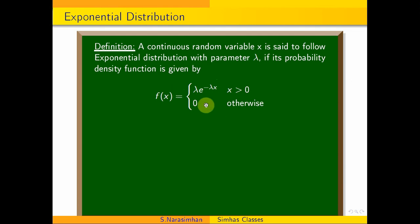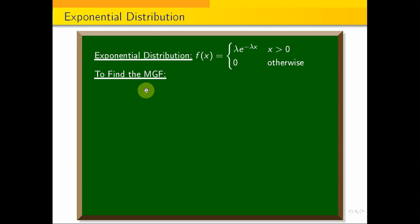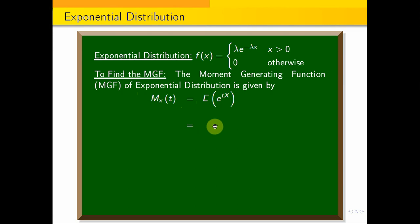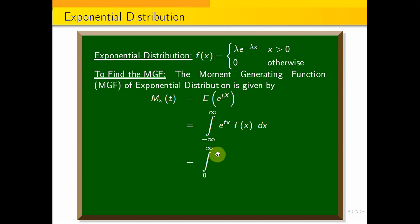This is the exponential distribution. Now, we look at the moment generating function (MGF). The MGF of a continuous random variable for exponential distribution is given by the formula: M_x(t) = E[e^(tx)] = integral from −∞ to +∞ of e^(tx) · f(x) dx. This becomes the integral from 0 to infinity of e^(tx) · lambda · e^(−lambda·x) dx.